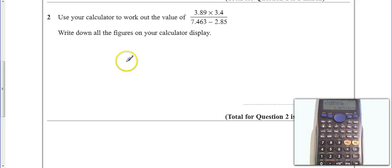If I just do it all as a calculation, it gives me the answer 2.867114676, and then obviously that would carry on. Write down all the figures on the calculator display, so I've done that.